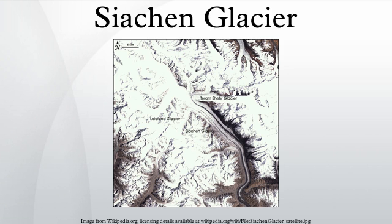Environmental issues: The glacier was uninhabited before 1984, and the presence of thousands of troops since then has introduced pollution and melting on the glacier. To support the troops, glacial ice has been cut and melted with chemicals. Dumping of non-biodegradable waste in large quantities and the use of arms and ammunition have considerably affected the ecosystem of the region.